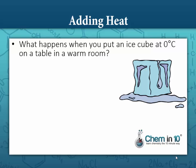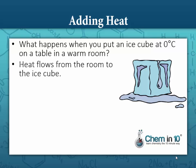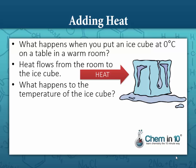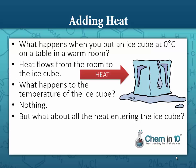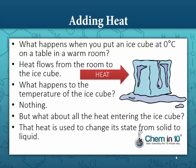What happens when we put an ice cube at zero degrees Celsius on a table in a warm room? Heat flows from the warmer substance to the colder substance, so heat from the room will enter the ice cube. What happens to the temperature of the ice cube as heat is absorbed? Nothing — because all that heat is being used to change its state from solid to liquid, which is the heat of fusion.